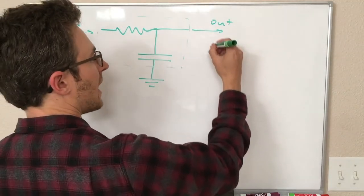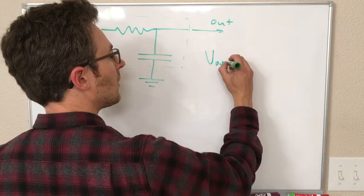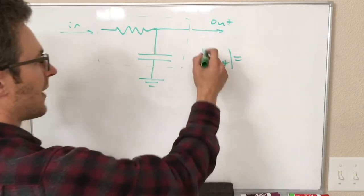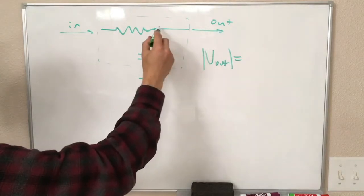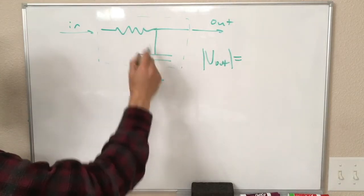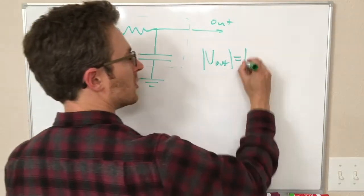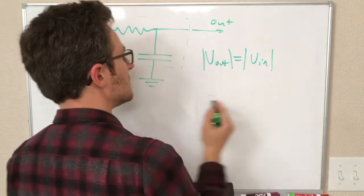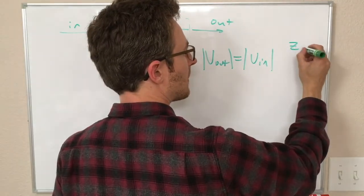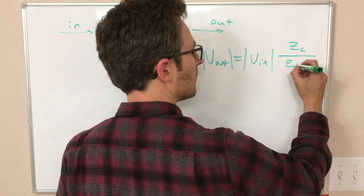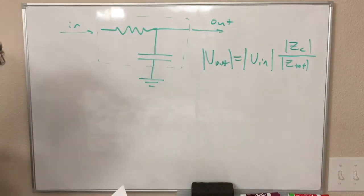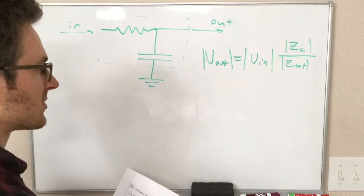The voltage here at Vout, we can use the voltage divider equation to find out how big this is. Remember, the output here is just measuring across the capacitor, and the total impedance is these two together. Vout is going to be Vin times this impedance fraction, and that is Zc over Z total. I should put absolute values on those two so we don't have any funny complex number stuff.